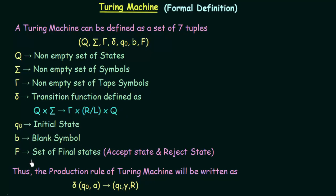Now let us see how we can write the production rule of Turing machines. The production rule means that initially we are in the starting state Q0, and on getting a particular input symbol — we represent it by A — it goes to another state Q1, writes the symbol Y onto our tape, and then moves either right or left. Here it is moving right. This shows basically how the production rules of Turing machines are written, and it should clarify how transitions are taken.